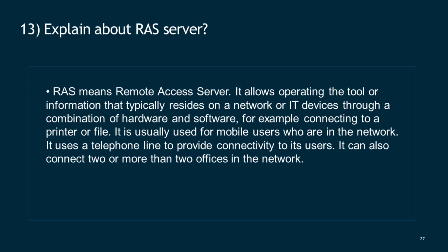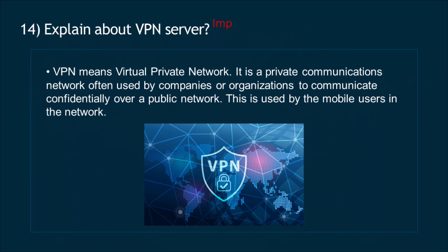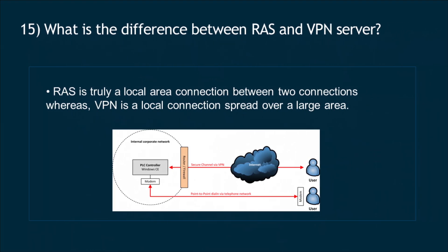RAS can also connect two or more offices in the network. Question 14: Explain about VPN server. VPN means Virtual Private Network. It is a private communications network often used by companies or organizations to communicate confidentially over a public network, and is used by mobile users in the network. Question 15: What is the difference between RAS and VPN server? RAS is truly a local area connection between two connections, whereas VPN is a local connection spread over a large area.